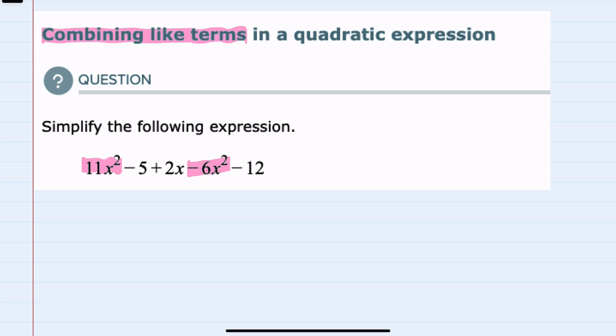Those are like terms that can be combined. One way to think of this is that we have 11x squareds and we subtract 6 of those x squareds that we would be left with 5x squareds, so we have combined those like terms.